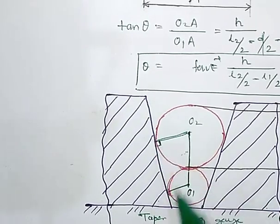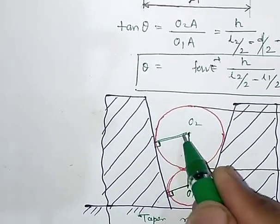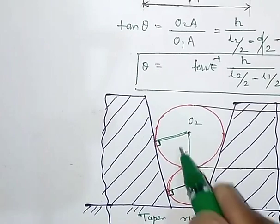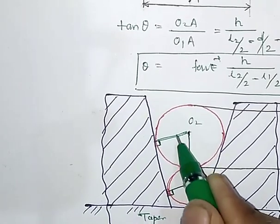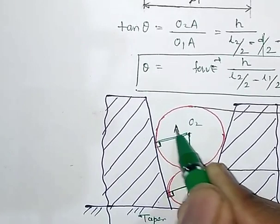By geometry this is always 90 degrees because sphere always touches the surface at 90 degrees. And then draw the parallel line along the surface from O1. You will get this triangle, let us call it as A.